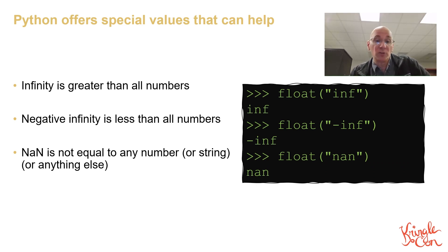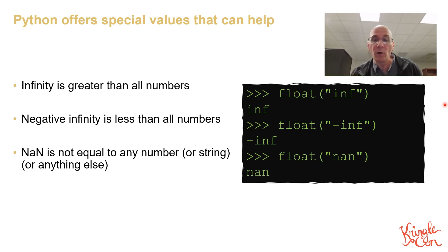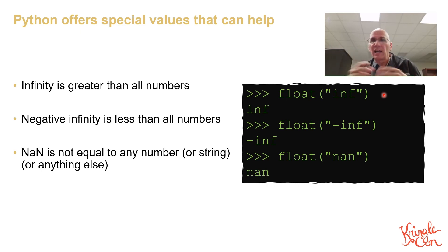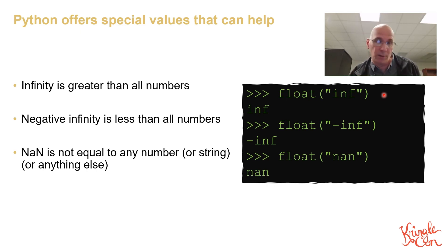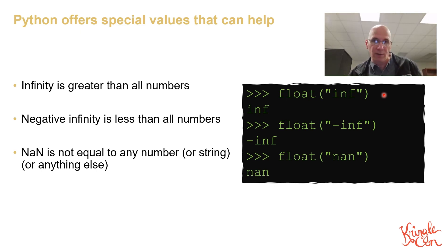Python has some special values you can use to solve problems like this. It has the infinity value: if you call float() and pass it the string 'inf' or 'infinity' — in various uppercase/lowercase combinations — it returns a value equal to infinity, which is higher than every other floating point number or integer. There's also negative infinity, lower than every other value, and there's NAN, which gives back a value that's not a number. Let's look at how we can use these in their intended way.